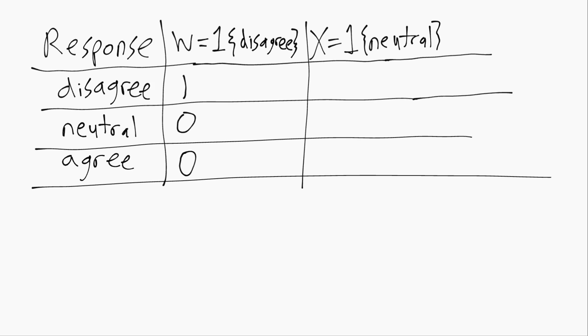So now when the response is disagree as in the first row, the indicator function evaluates to zero because disagree is not neutral. So x will be zero when the response is disagree. When the response is indeed neutral then x is equal to one, and when it's agree x will be equal to zero.